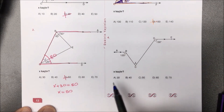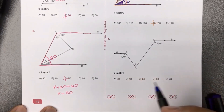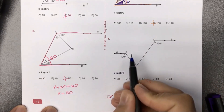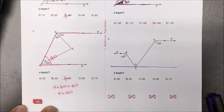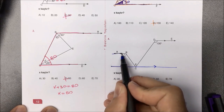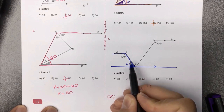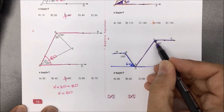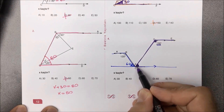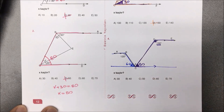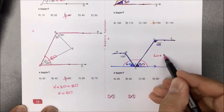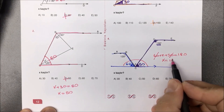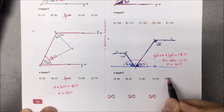Dördüncü sorudayız: verilenlere göre X kaçtır diye sorulmuş. Bu şekli çok bölmeyi sevmediğim için şu alt noktadan bu iki paralele paralel bir doğru çizersiniz. Burada bir U harfi var; 120 ile 60 toplayın, 180 yapıyor. Benzer şekilde hemen buradaki U'yu da göreceğiz: 130 ile 50 toplandığında 180 yapıyor. Son olarak burada bir doğru açı var: 60 artı X artı 50'nin toplamı 180 derece olacak. 60 ile 50'yi topladık 110; 180'den 110 çıkartacak olursak aradığımız X yanıtı 70 olarak bulunmuş olur.